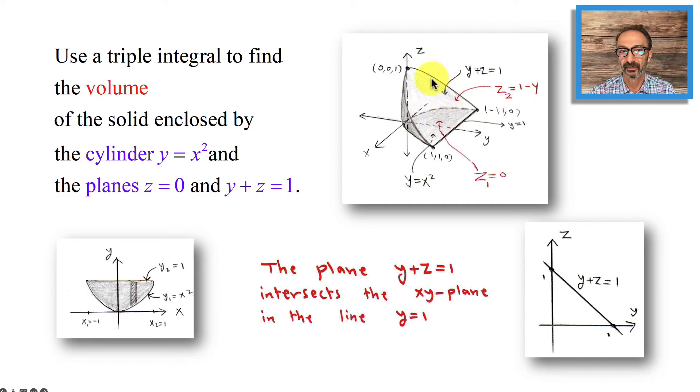This tilted surface—the projection down right here is the parabola. So we're going to use y1 and y2, and the plane y plus z equals one—that's this plane—will intersect the y-axis at this line, which is y equals one.